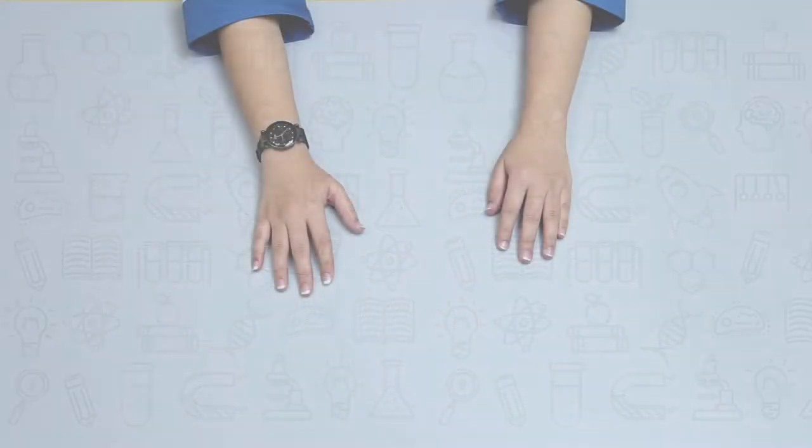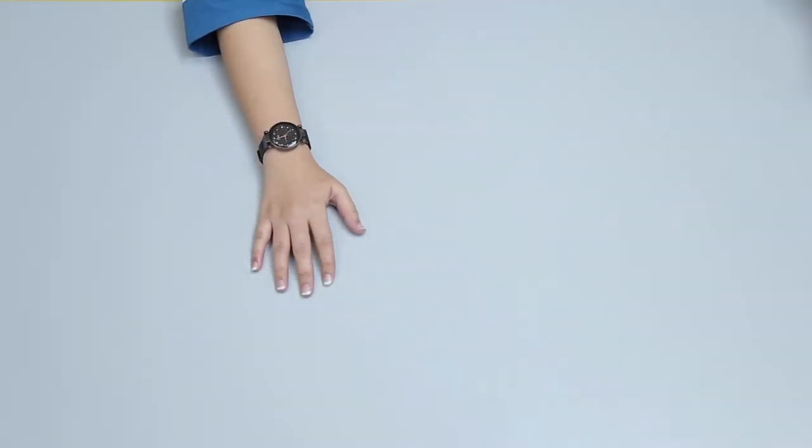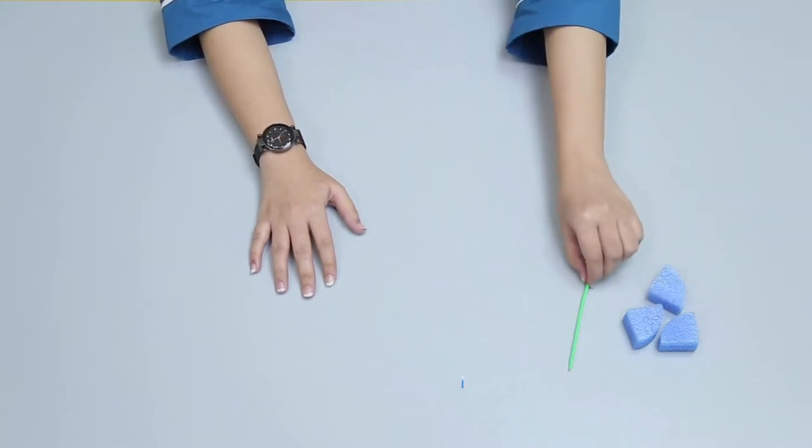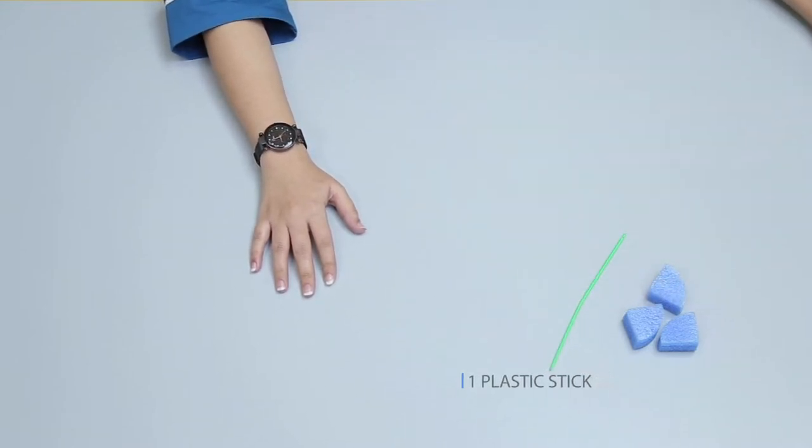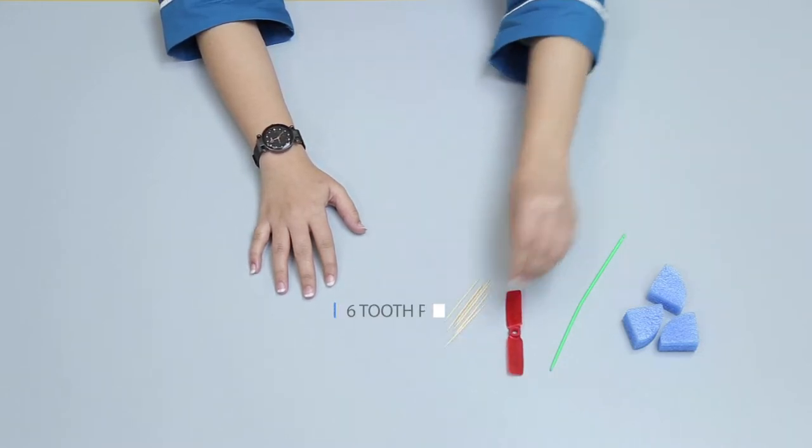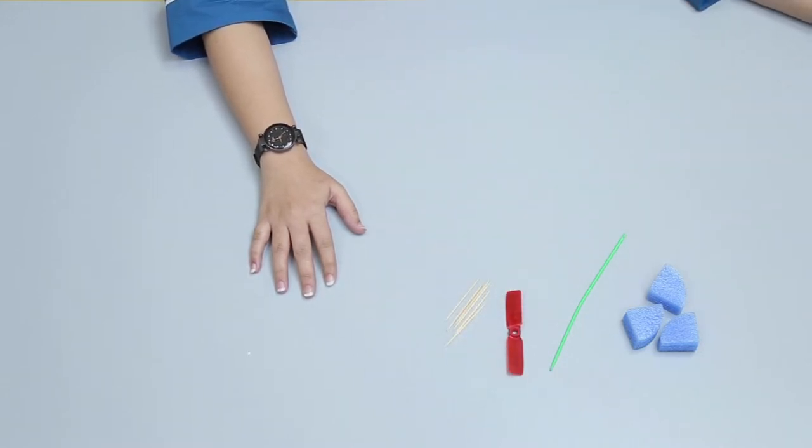Let's make a flying machine using three foam quarters, one plastic stick, one propeller, six toothpicks, one foam cylinder.